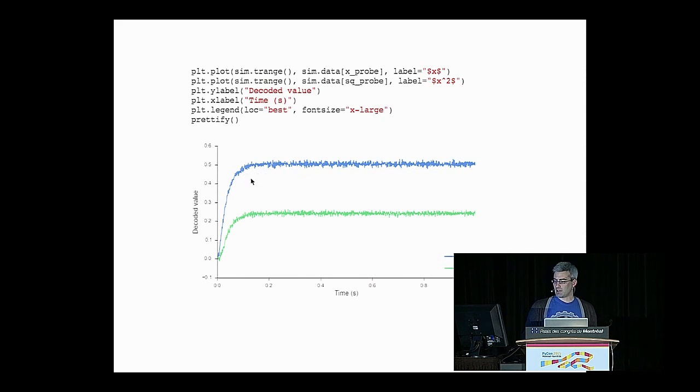But since we have this higher level of abstraction in Nengo, we can also look at the value that these groups of neurons are representing over time. So our x population, the blue curve, very quickly reaches a value of 0.5, which is what we were trying to encode in the first place. And our squared population, the green curve encodes x squared, which is about 0.25. We're doing a pretty okay job here.